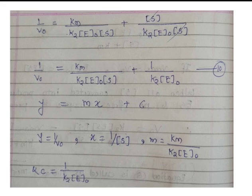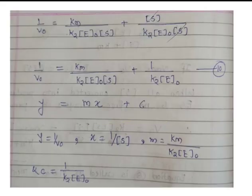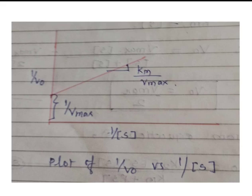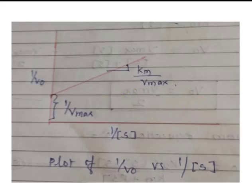This is a linear equation y = mx + c, where y = 1/V0, x = 1/[S], slope = Km/(K2[E]₀) = Km/Vmax, and intercept = 1/(K2[E]₀) = 1/Vmax. A plot of 1/V0 vs 1/[S] gives a straight line — this is the Lineweaver-Burk plot used in Michaelis-Menten catalysis. You can go through it and try to solve the equation yourself.